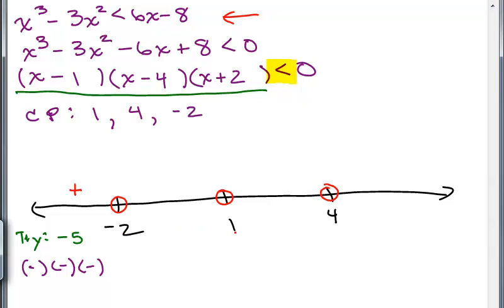Let's pick a number in between negative 2 and 1. Zero's in there, I always try 0 if I can, so I'm going to try 0. In the first factor, if I put in 0, that's negative, because 0 minus 1 is negative. 0 minus 4, that's also a negative number. And 0 plus 2, that's a positive number. Negative times negative times positive is positive.